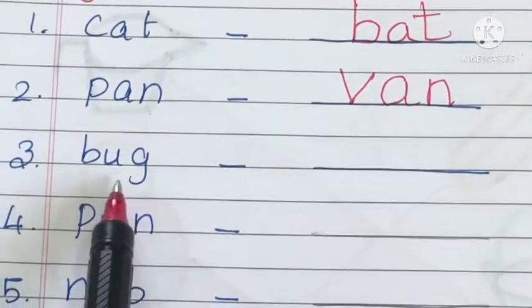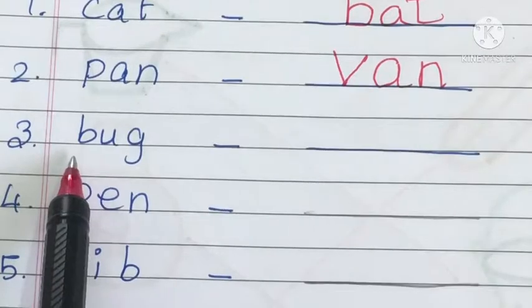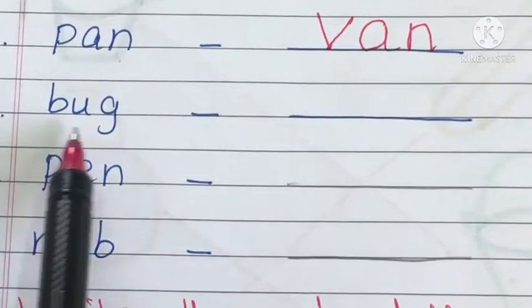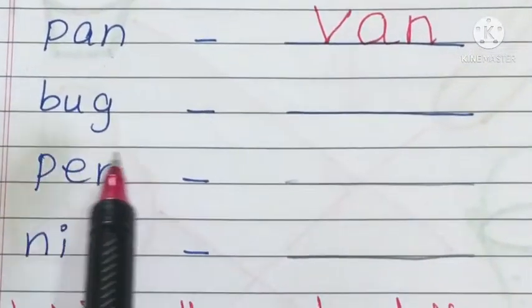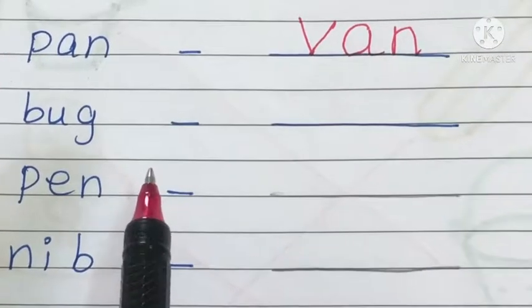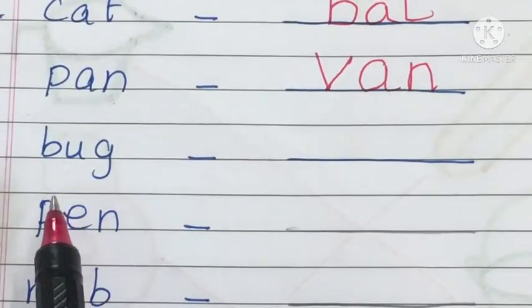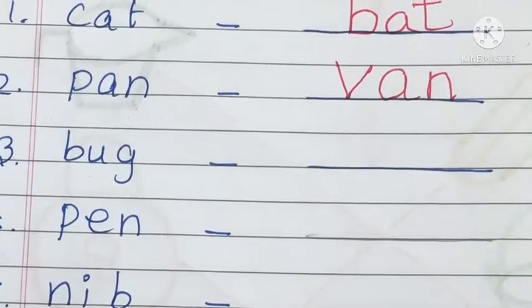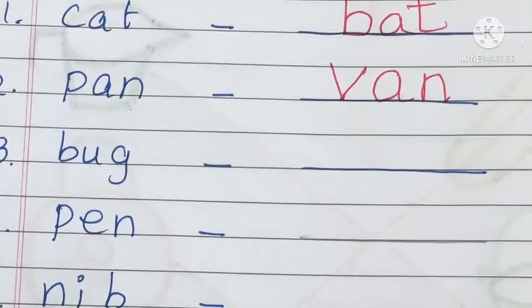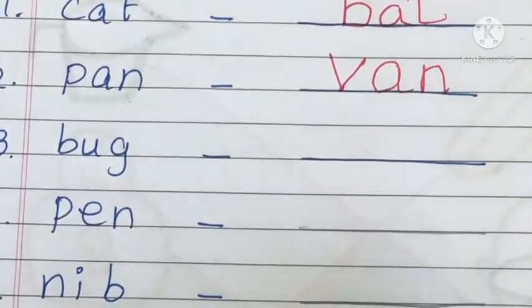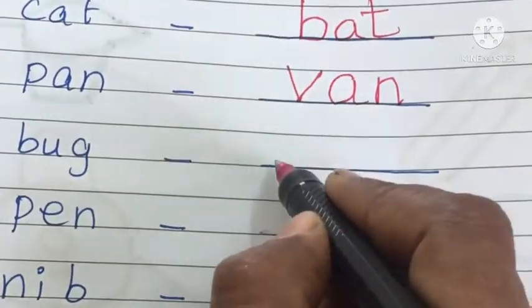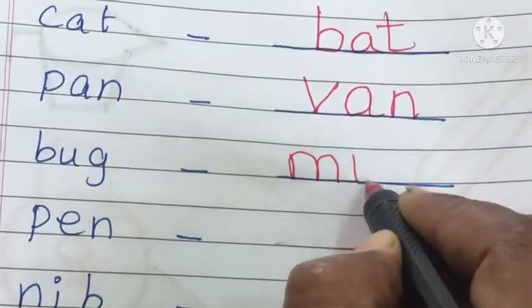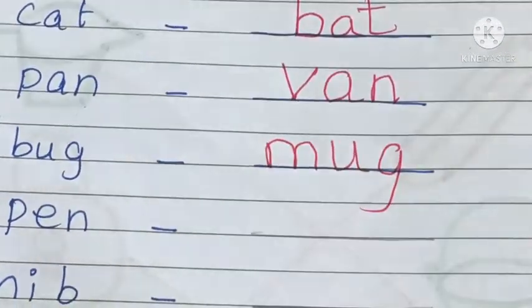Read the next word: it is bug. What is the rhyming word for bug? We can write mug — many rhyming words are there. Write it — M-U-G, mug.